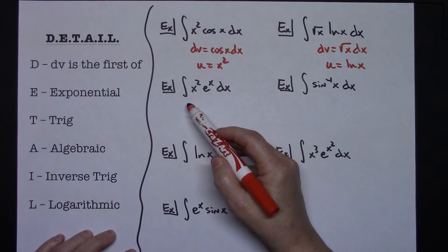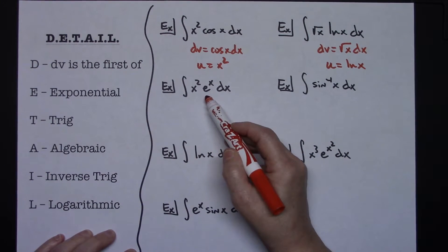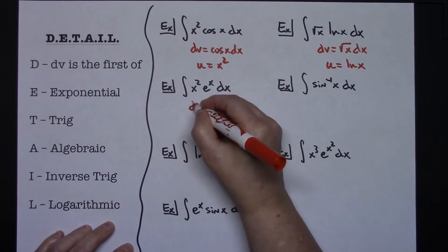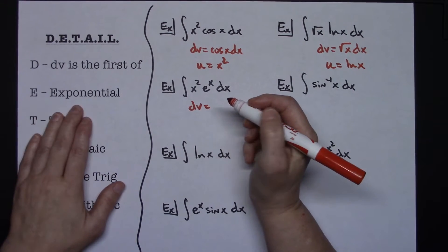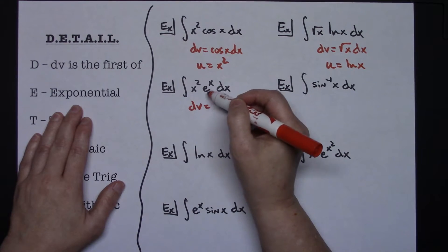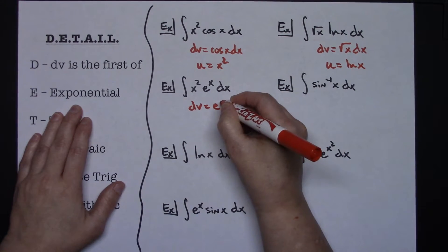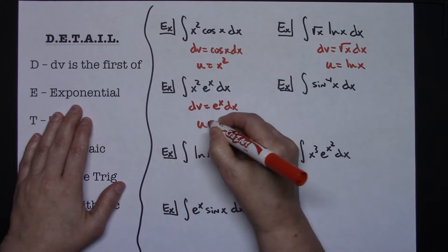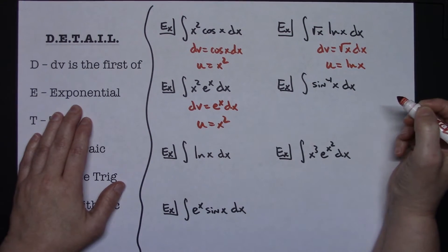Next, the integral of x squared e to the x dx. Starting with DV: I do have an exponential function, e to the x, so I let DV equal e to the x dx, and U equals x squared.